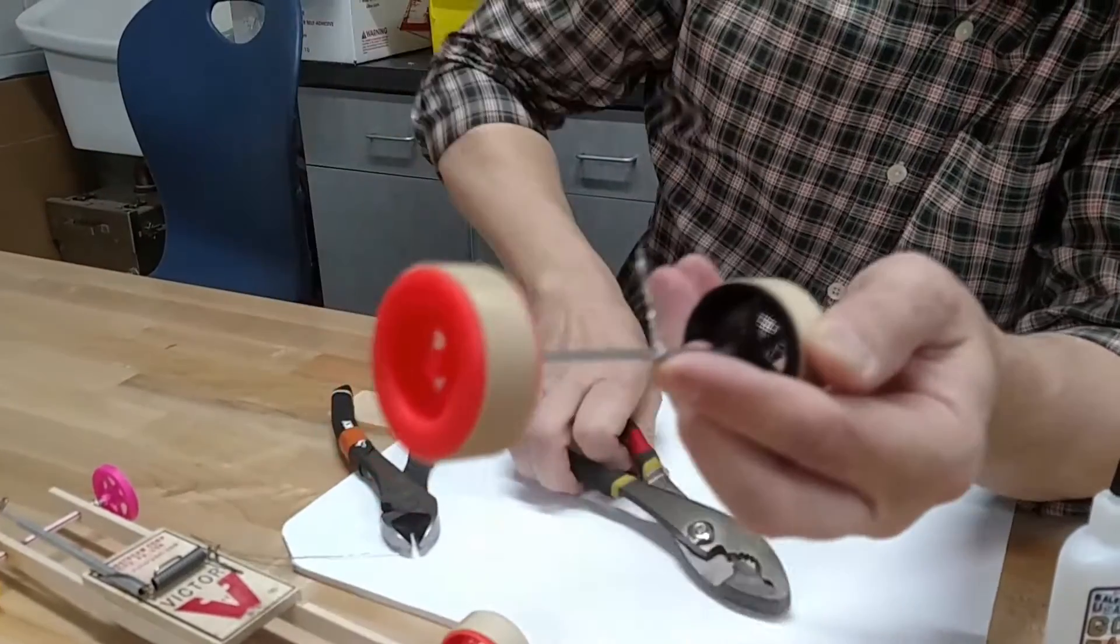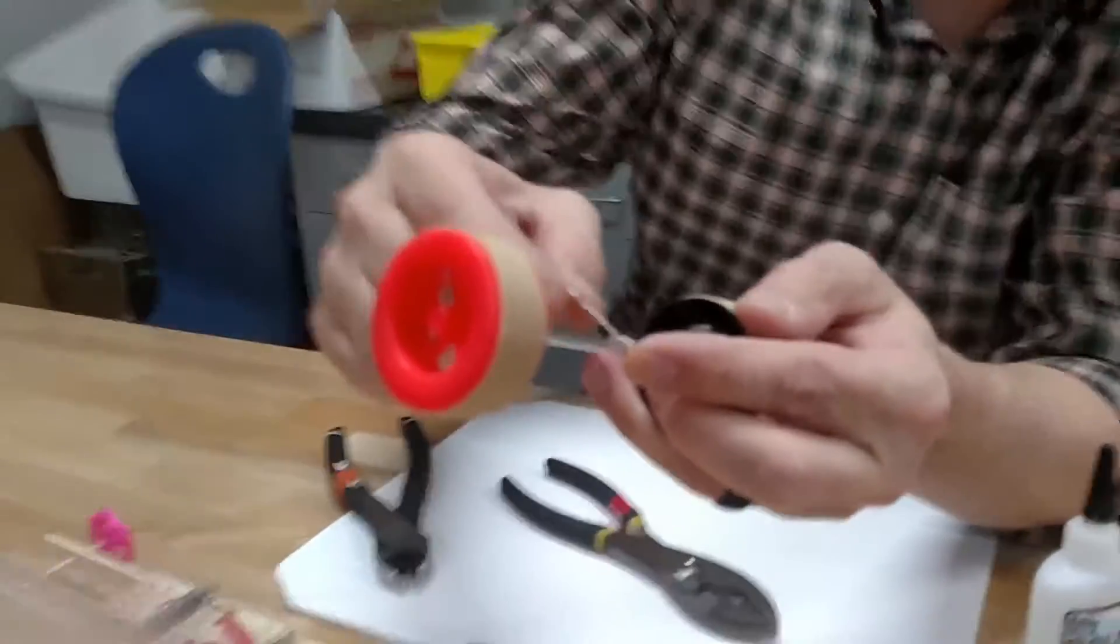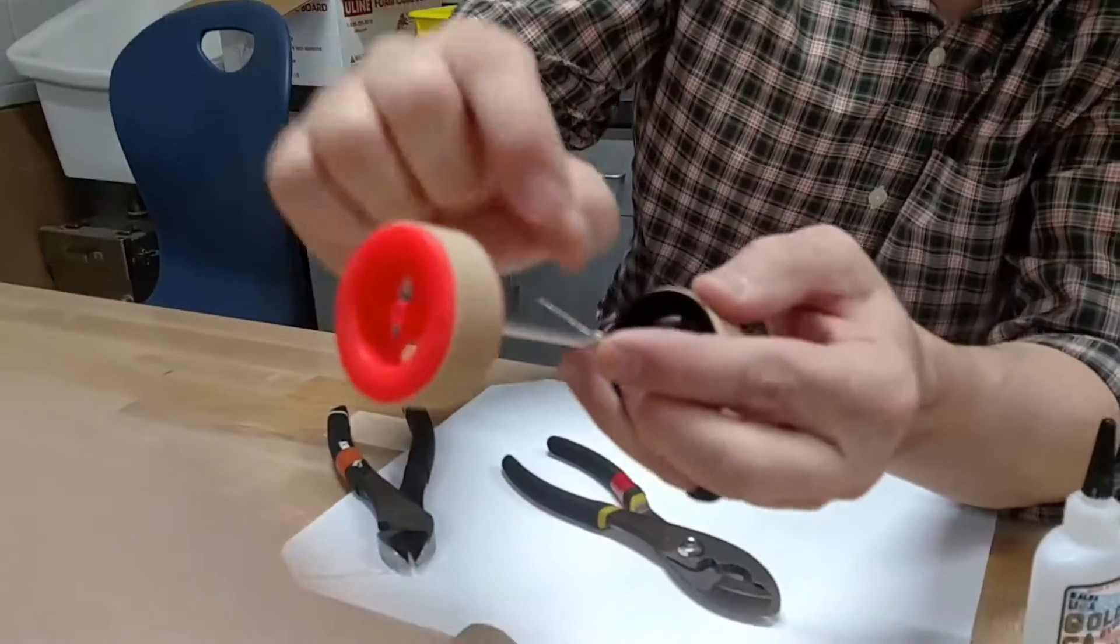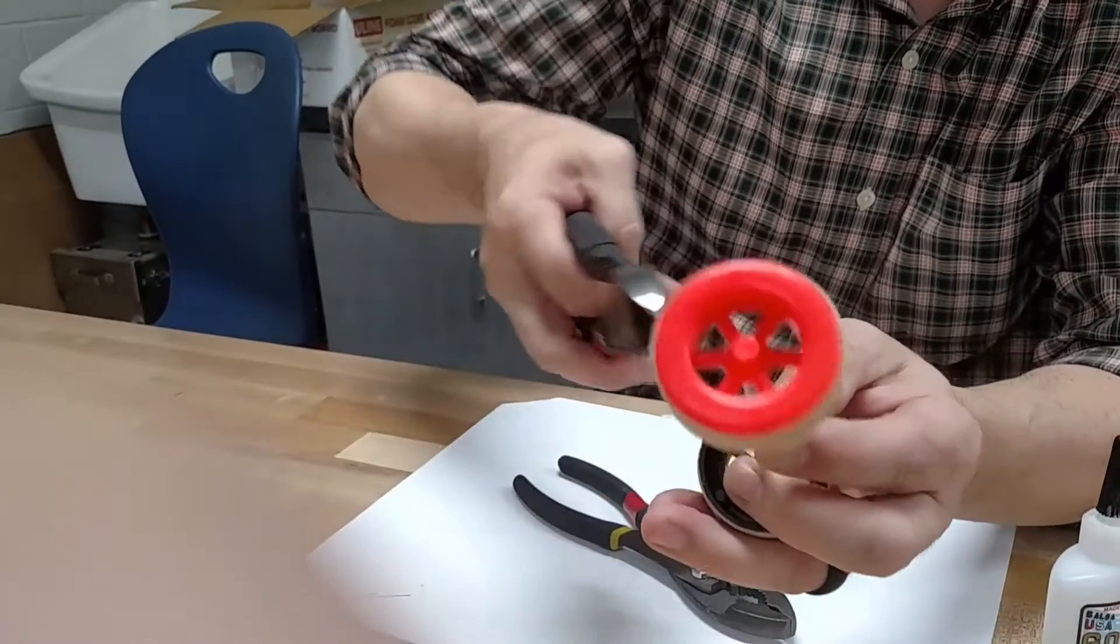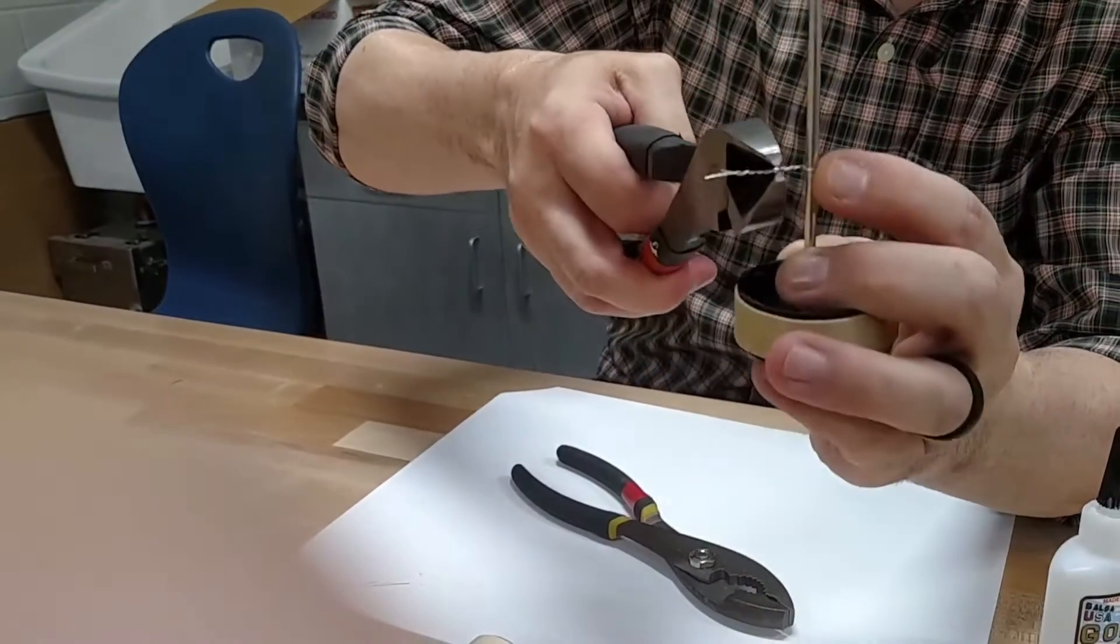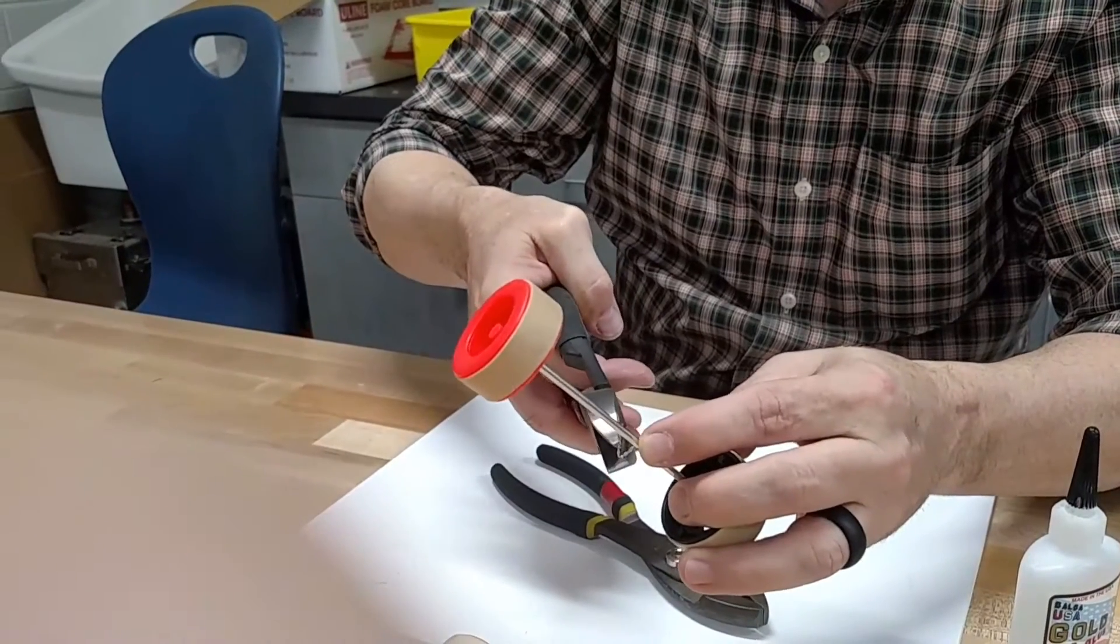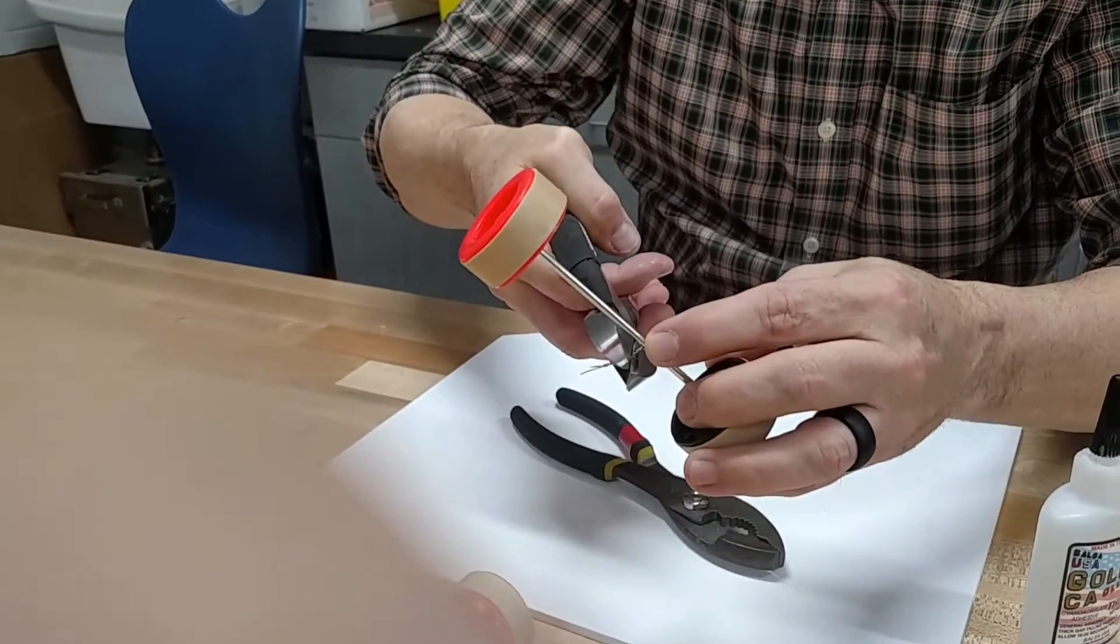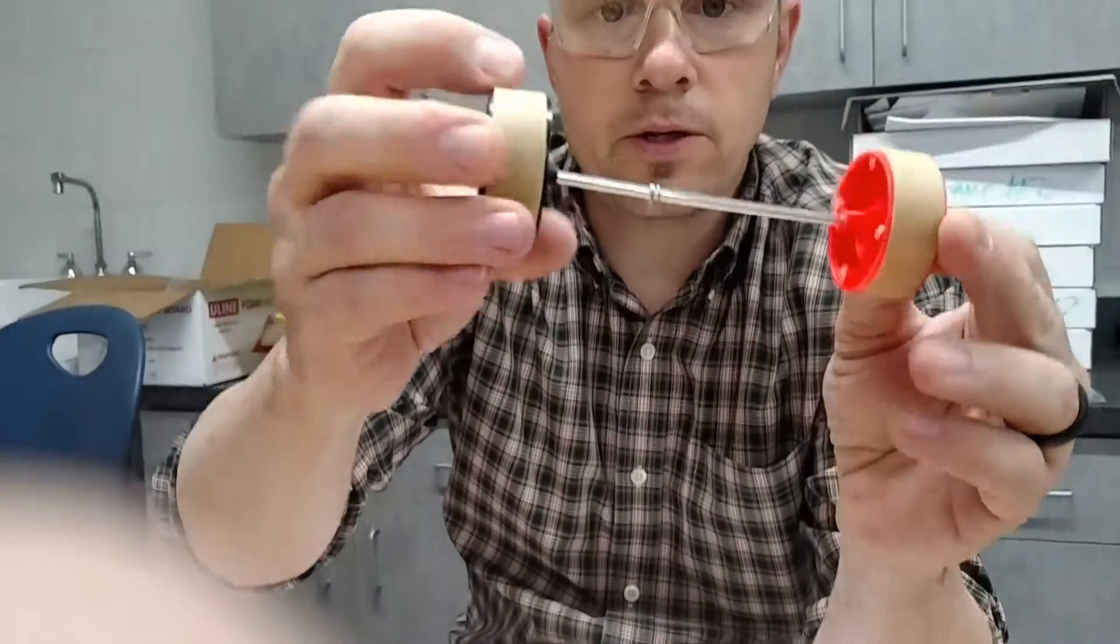Now, if you can make it nice and uniform and even like that, that's great. I don't need it this long because I only need enough for the string on the loop to be able to hook onto here. So I can snip part of it off like this. Just snip a little piece off. And that's what it should look like when it's all done.